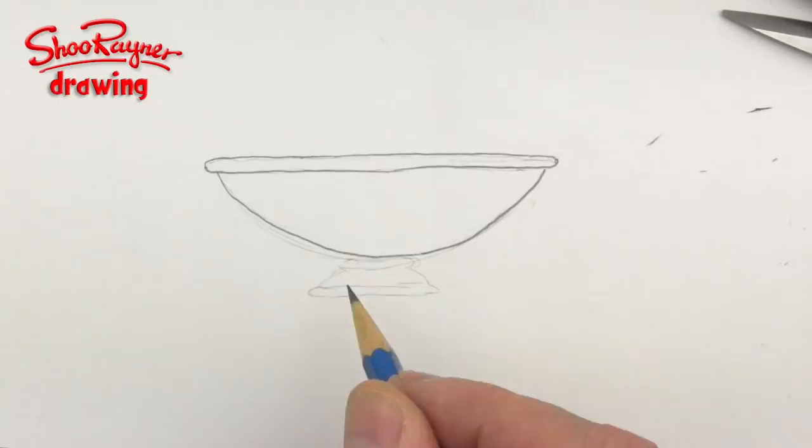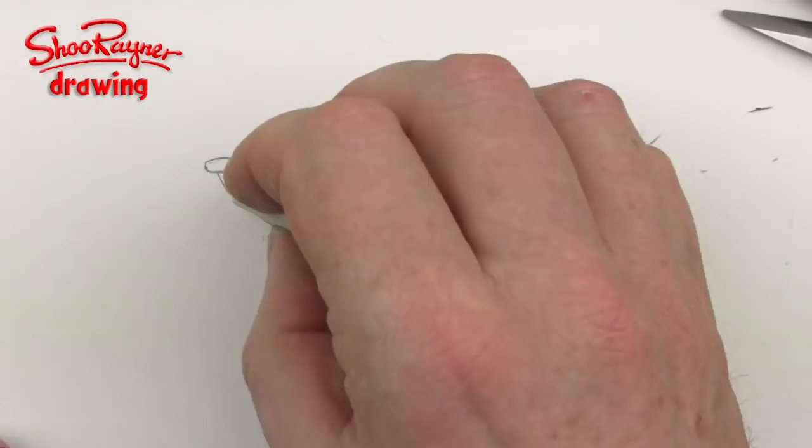So there we have our outline of the bowl. There are some bits there that I might want to get rid of, so I can just gently erase those working out bits there. If I really want to get in there tight and close, an eraser doesn't have to stay this pristine shape forever.